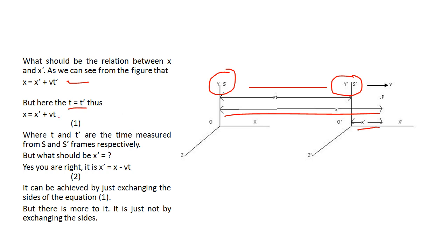Then, x equals to x dash plus Vt, where t and t dash are the time measured from S and S dash frames respectively. But what should be x dash? Yes, you are right. X dash equals to x minus Vt. It can be achieved by just exchanging the sides of the equation 1. But there is more to it. It is just not by exchanging the sides.